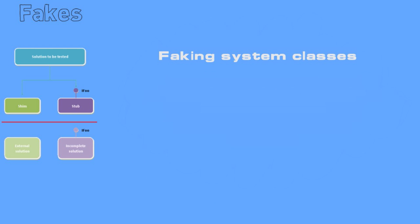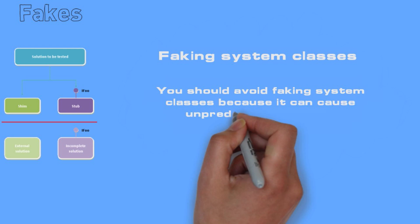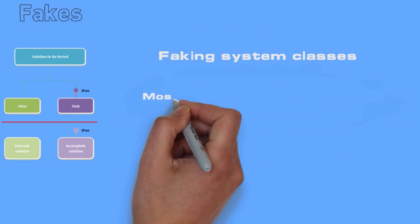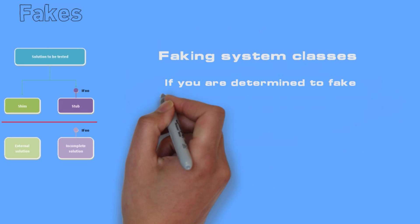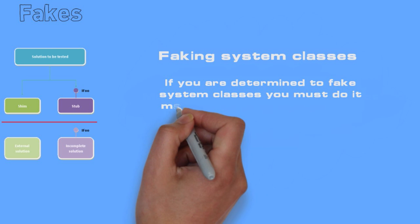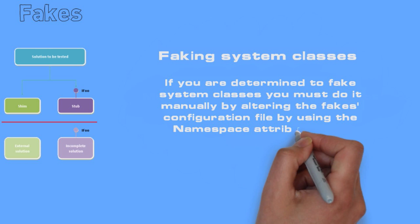Faking System Classes: You should avoid faking system classes because it can cause unpredictable behavior. Most of the system classes cannot be faked by default. If you are determined to fake system classes you must do it manually by altering the fakes configuration file using the namespace attribute with an add tag.